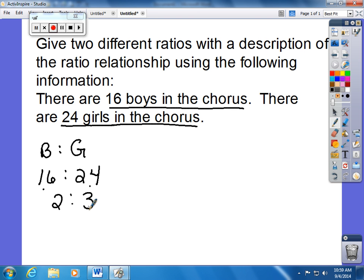You can flip the ratio or find a total. The second ratio I'm going to do is boys to total. There are 16 boys to a total of 40 students in chorus. To find that 40, I just added 16 and 24 together. I can also use the simplified version: there are two boys for every five people in the chorus.